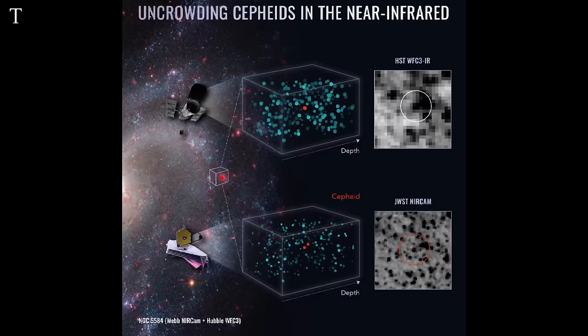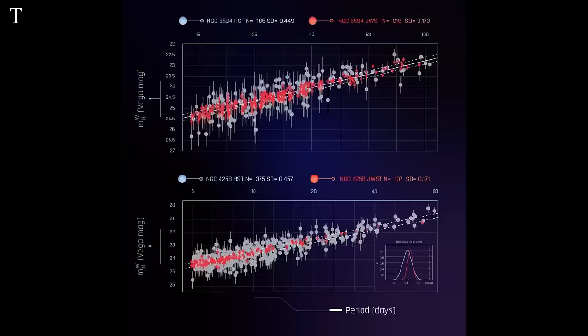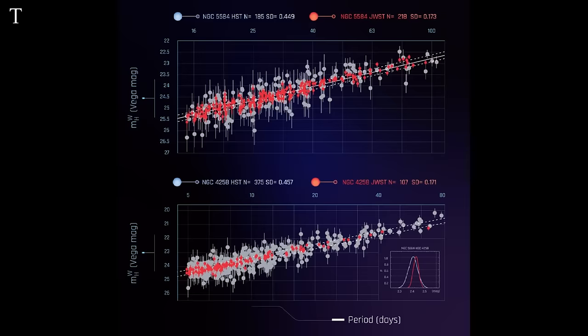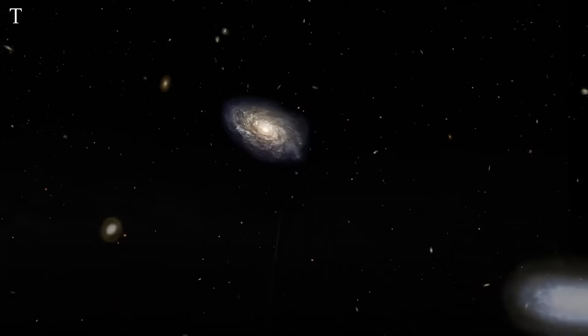Webb's observation revealed that the earlier Hubble Space Telescope measurements were accurate, although noisier. This means that both telescopes agree on the information they found about the Hubble constant. But here's the tricky part. The universe seems to be expanding much faster than what scientists expected based on its baby picture, the cosmic microwave background. Hence, the problem of the Hubble tension still remains. And this brings us to a very important question. What are we missing here?